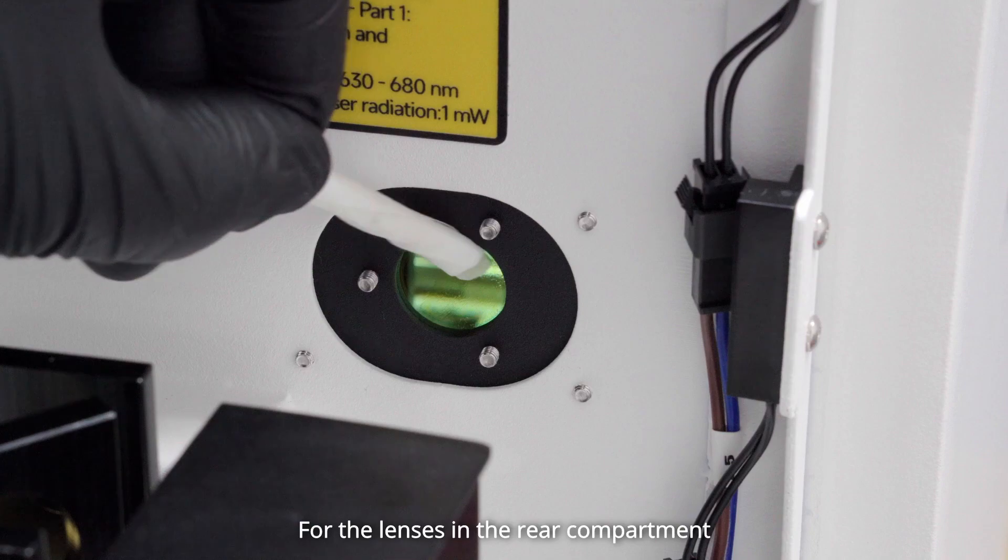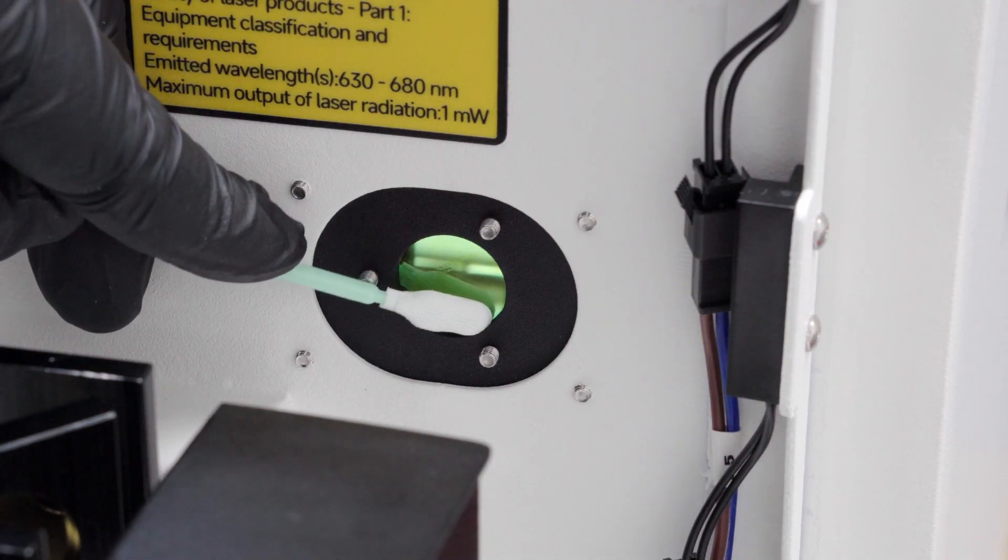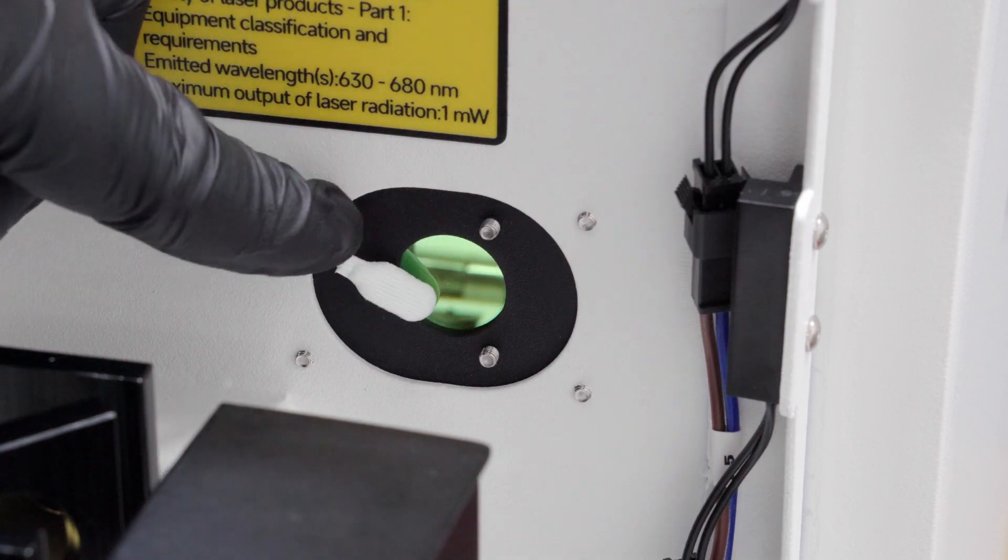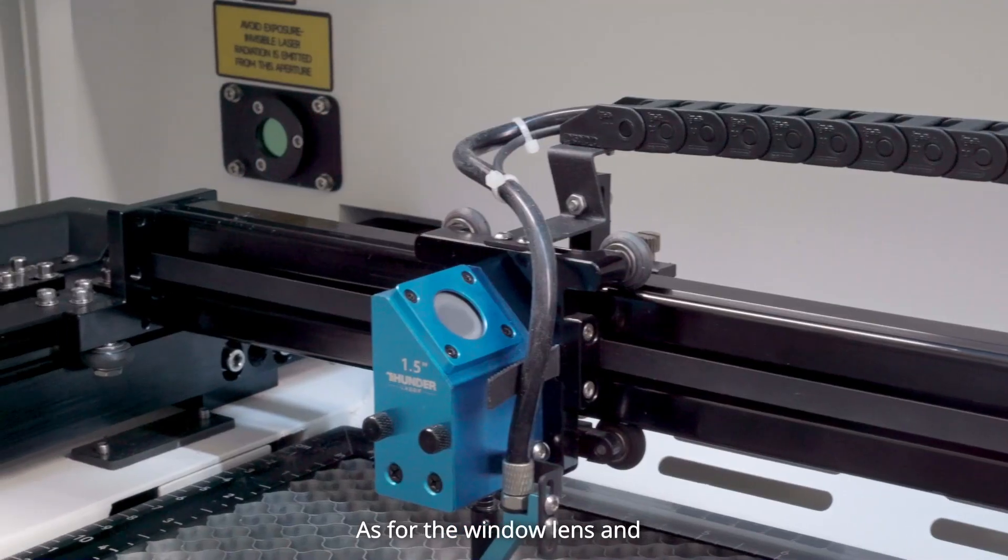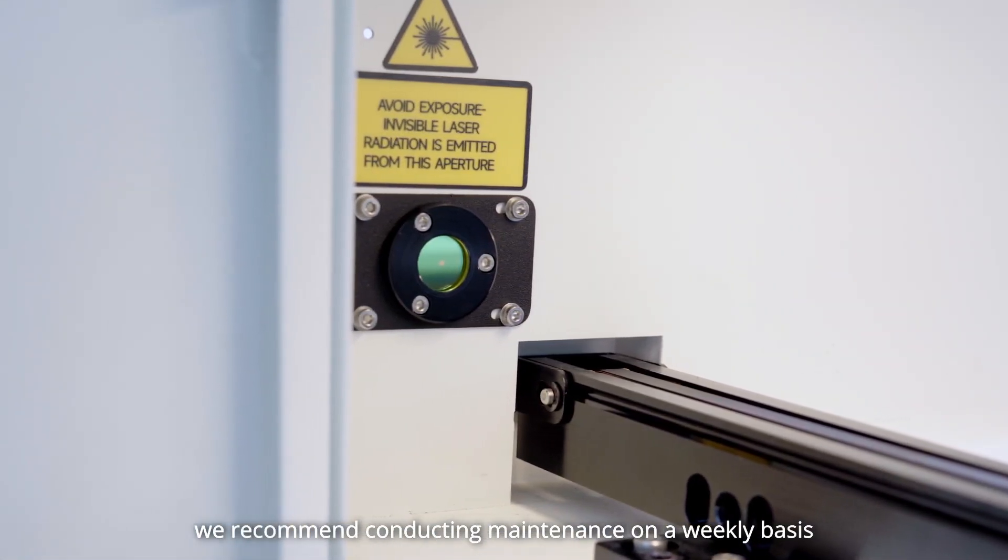For the lenses in the rear compartment, a monthly maintenance session is sufficient. As for the window lens and reflective lens in the workstation area, we recommend conducting maintenance on a weekly basis.